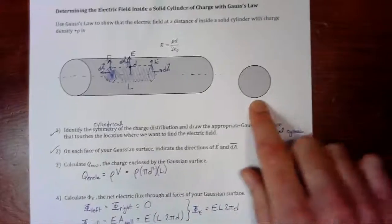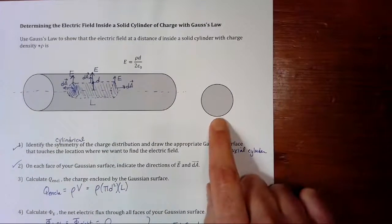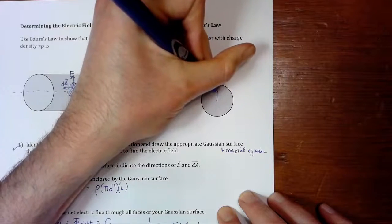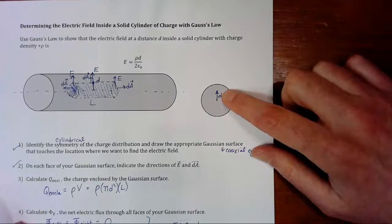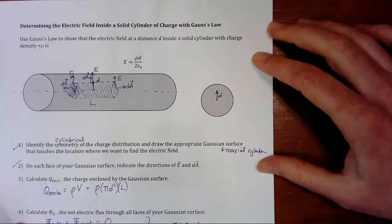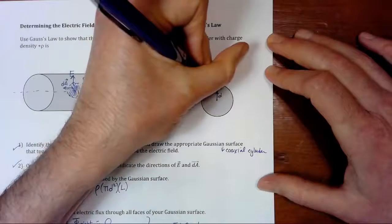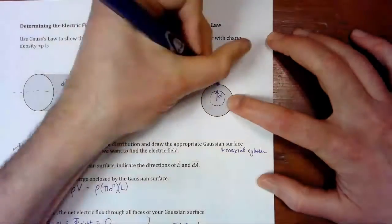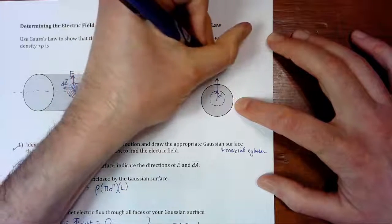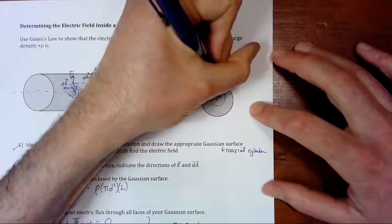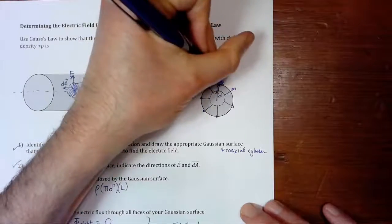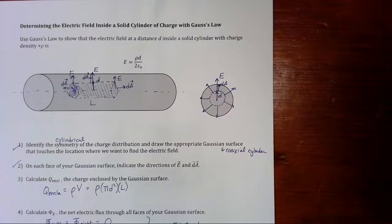You're probably wondering what the circle in the diagram is — I forgot to mention that it's supposed to be a side view, a cross-sectional view, of our cylinder. So if point d is a distance d away inside the cylinder, our Gaussian cylinder looks like a smaller circle inside, where the electric field is pointing outwards everywhere, and so is the area vector for the wall.